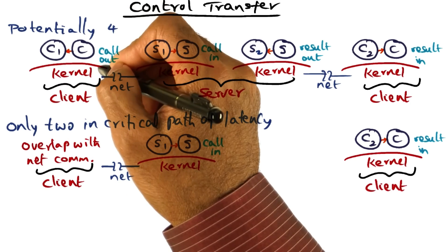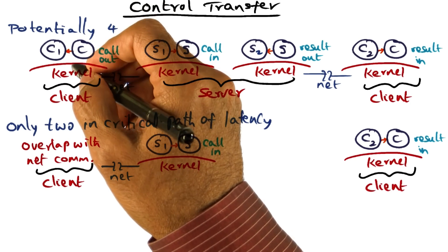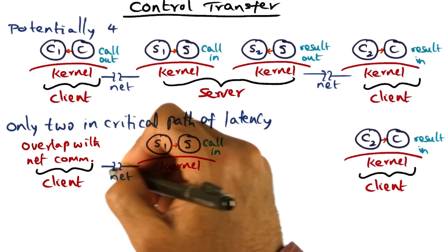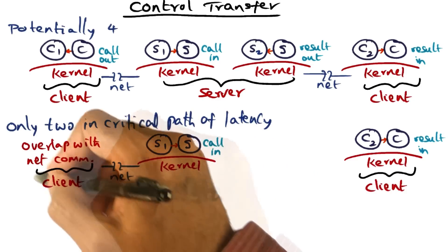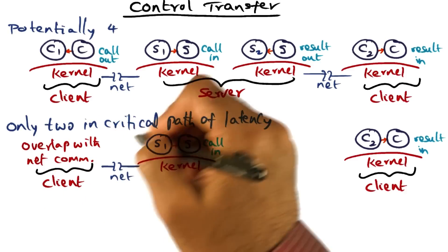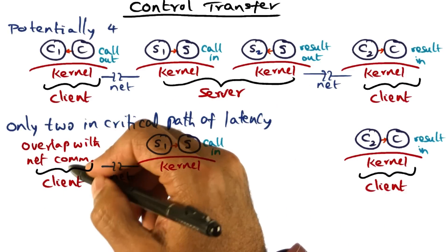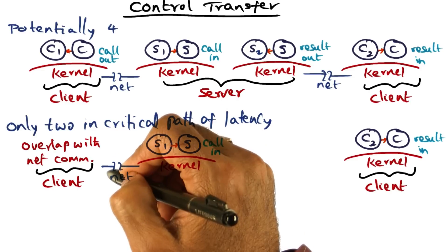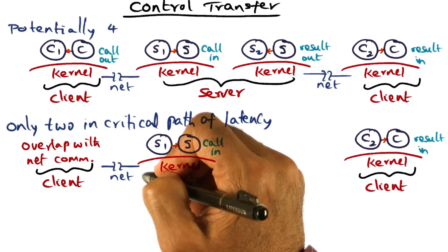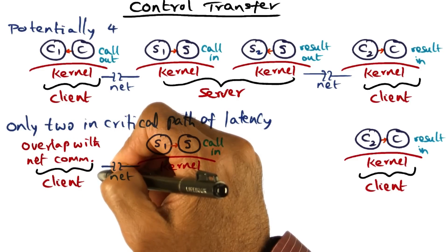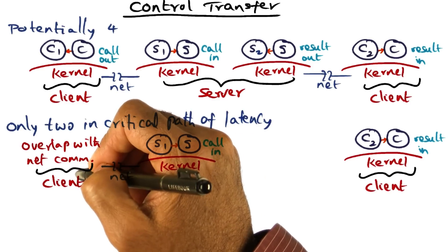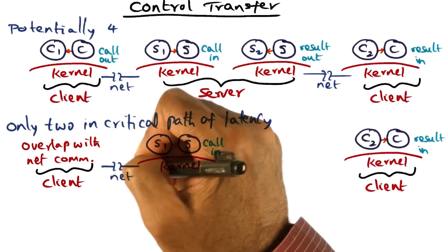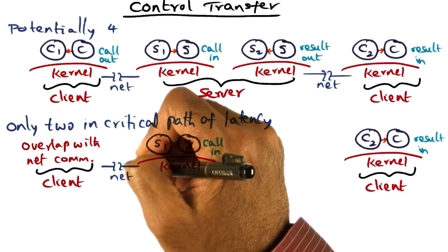The context switch that happens on the client machine to keep the client machine utilized can be overlapped with the network communication to send the call out. In other words, this context switch is not in the critical path of RPC latency, and therefore we can do this context switch while the RPC call is in transmission on the wire — overlapping this context switch on the client box after the call has been sent out with the communication time on the wire.